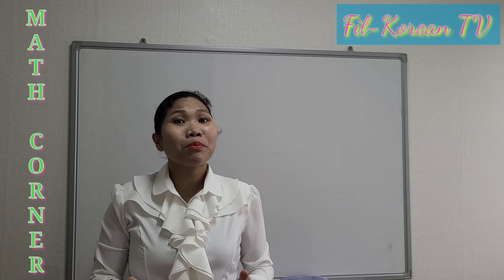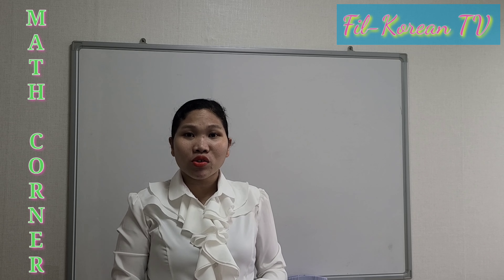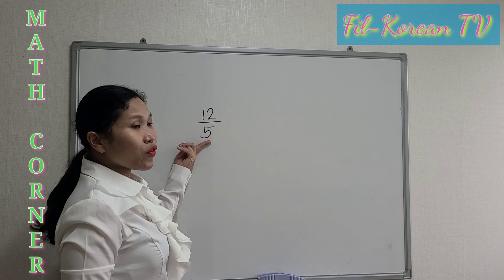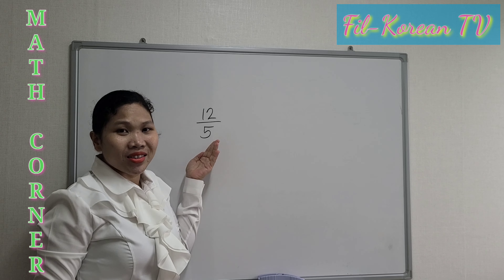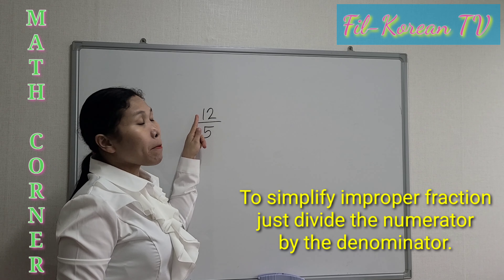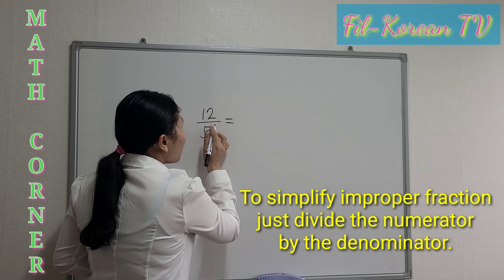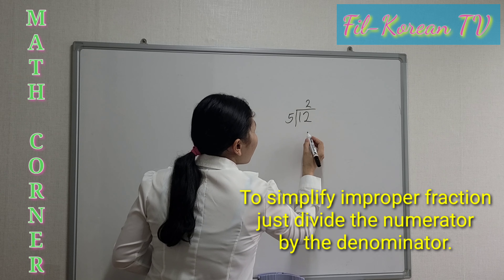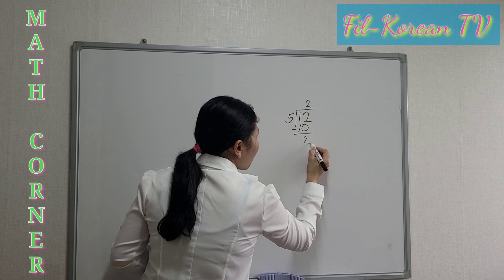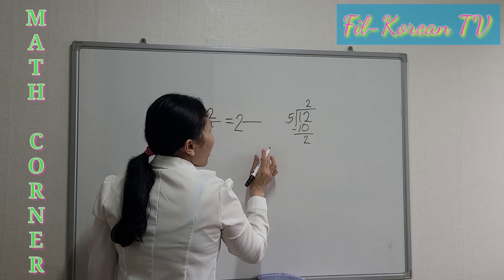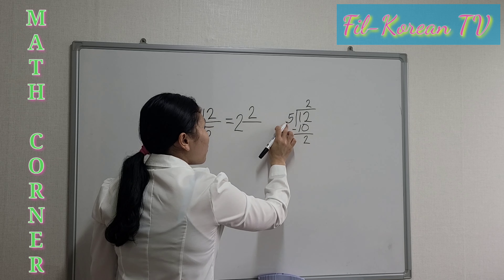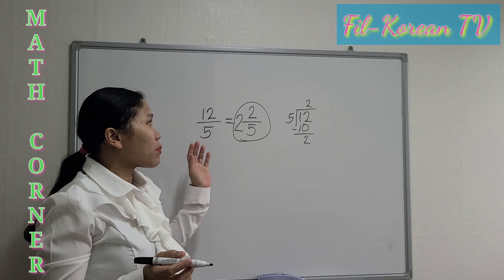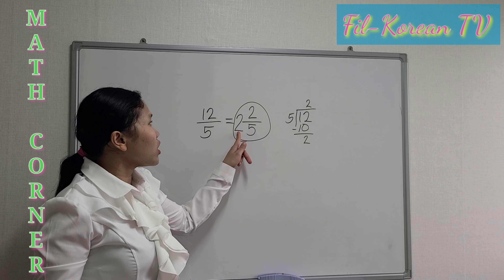Now let's proceed to improper fractions. How can we simplify improper fractions, or reduce them to lowest terms? For example, 12 over 5 — 12 is greater than 5. To simplify improper fractions, just divide the numerator by the denominator. 12 divided by 5: the answer is 2. 2 times 5 is 10, and 12 minus 10 is 2. The quotient is the whole number, the remainder is the numerator, and the divisor is the denominator. So the answer is 2 and 2 fifths. When we simplify improper fractions, the answer is always a mixed number — meaning there is a whole number and a fraction.